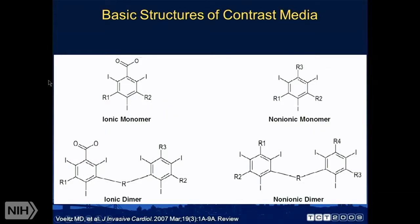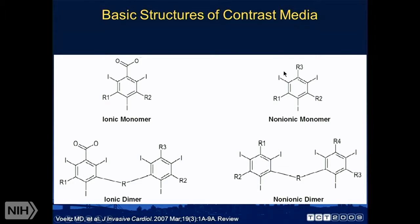Iodinated contrast agents are usually structured around a benzene ring with multiple iodines, existing as monomers or dimers. There are two basic classes: ionic agents — the early agents we used — and non-ionic, which is what we use now. Non-ionic agents are something of a miracle: in the old days we'd see very severe reactions to ionic media once or twice per week; now it's once or twice per year.